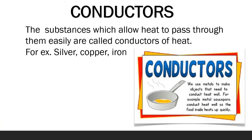The substances which allow heat to transfer through them are called conductors of heat. For example, silver, copper, iron, etc. All metals can easily transfer heat through them. That is why we use metal for making cooking utensils, as they are conductors of heat.